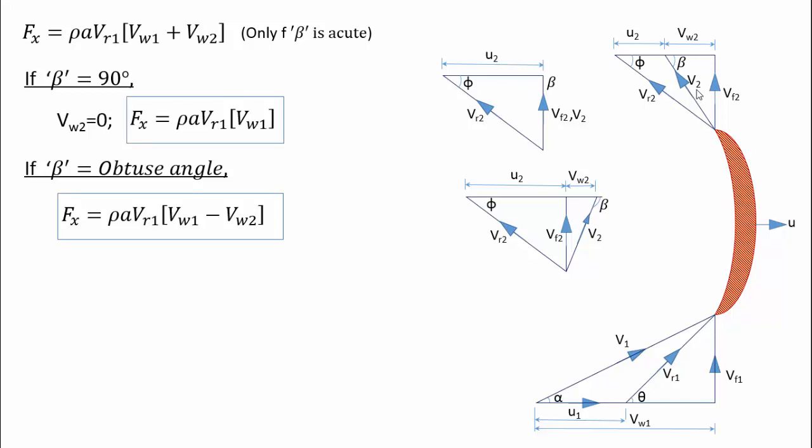Hence, in general, the force exerted by a jet on an asymmetrical vane is equal to ρ·A·Vr1·(Vw1 ± Vw2).